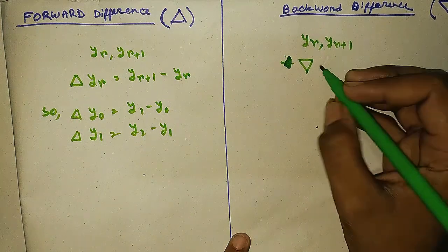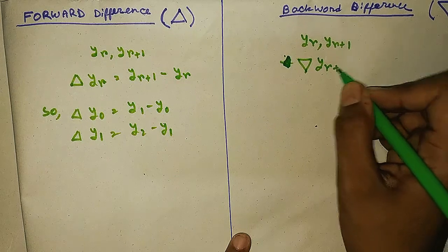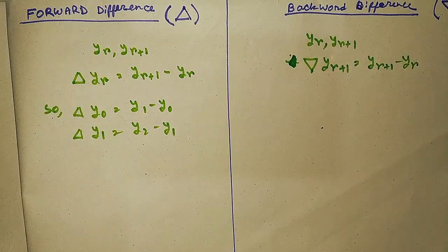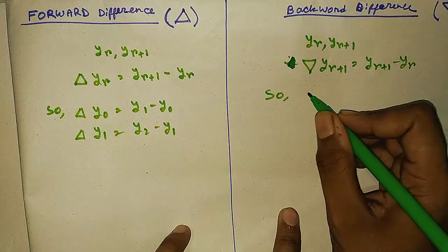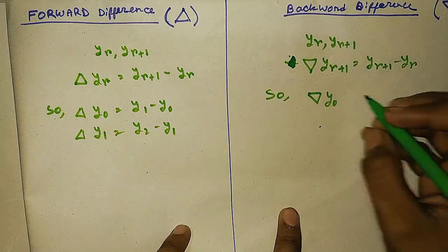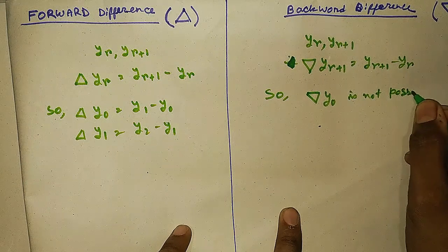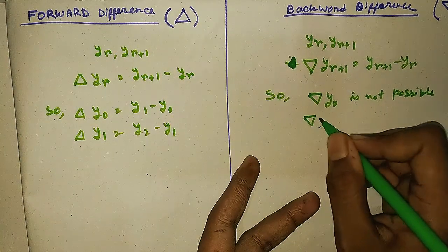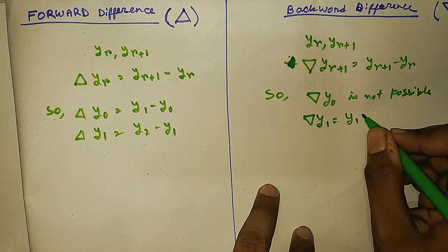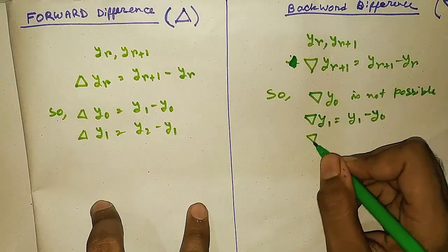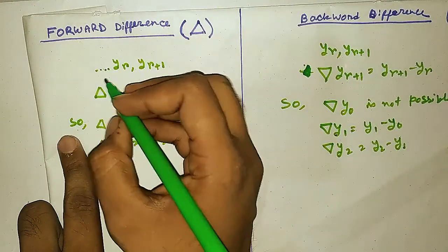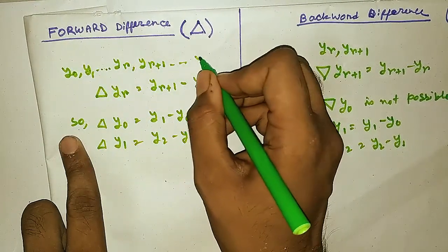In forward difference we subtract the current suffix from the next suffix. In backward difference we subtract the previous suffix from the current suffix. In nabla yr plus 1, r plus 1 is the current suffix. Notice that y0 is not available for backward difference at the first point because the previous suffix would be minus 1, and y minus 1 is not available. So in forward difference the problem is we need a next suffix, otherwise we cannot compute the difference. In backward difference the problem is if the previous suffix is not available, we cannot find the difference.